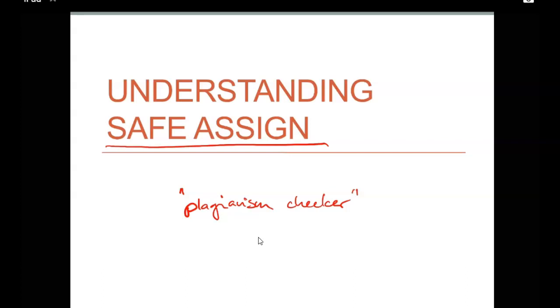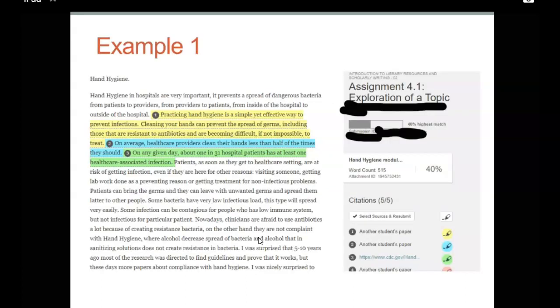So let's look at the first example. This comes from a paper on hand hygiene. You see right here, the overall plagiarism score is 40 percent. And personally, as an instructor, I always check the SafeAssign on every, on my student papers.